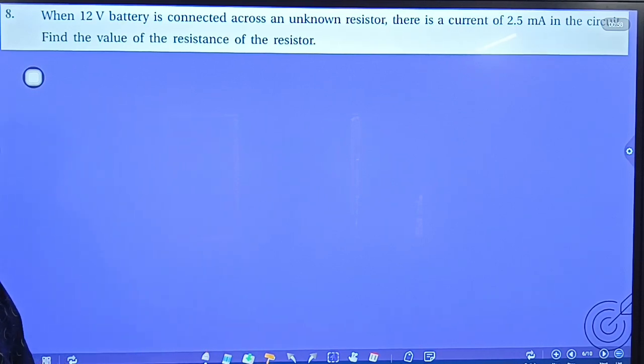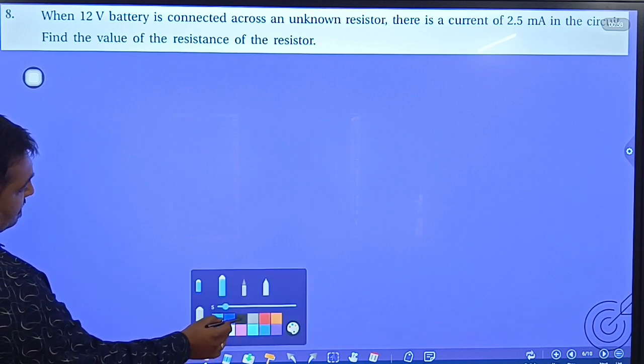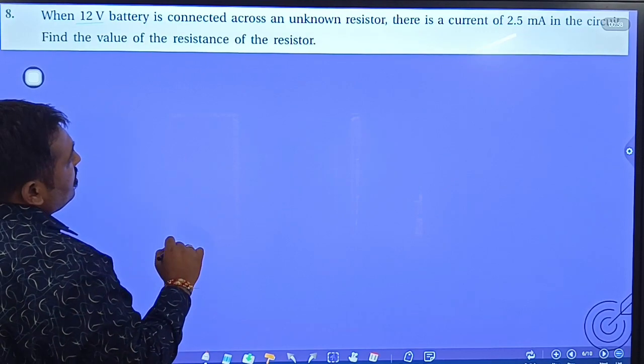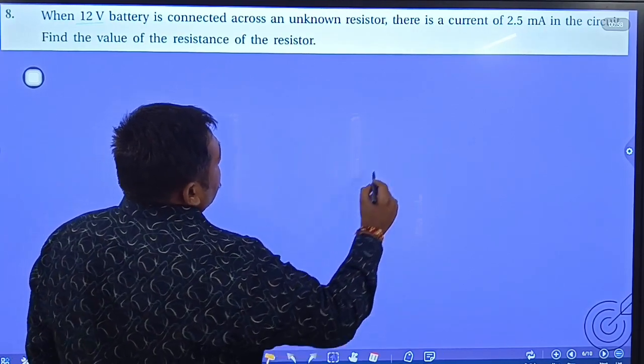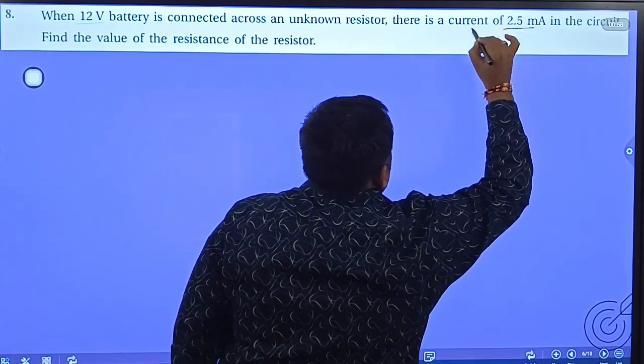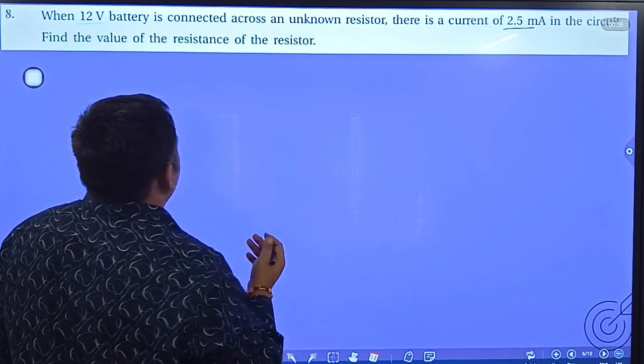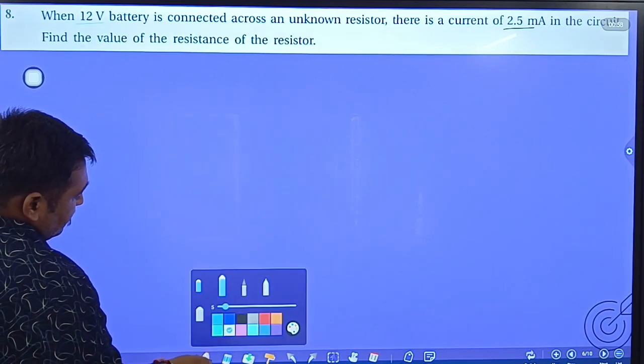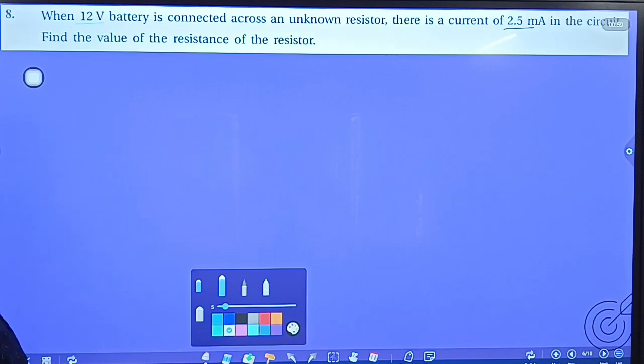When a 12 volt battery is connected across an unknown resistor, the current is 2.5 milliampere. Find the value of the resistance of the resistor. So here it is a very easy question.